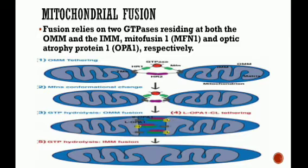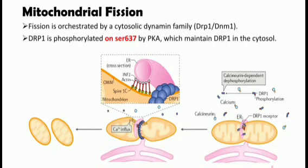In order to create new mitochondria, fission is needed. Fission is primarily orchestrated by Dynamin-Related Protein 1 (DRP1). DRP1 is phosphorylated on the serine 637 residue by Protein Kinase A, which maintains DRP1 in the cytoplasm. Fission occurs when DRP1 is dephosphorylated by a phosphatase known as calcineurin and recruited to the mitochondrial surface.